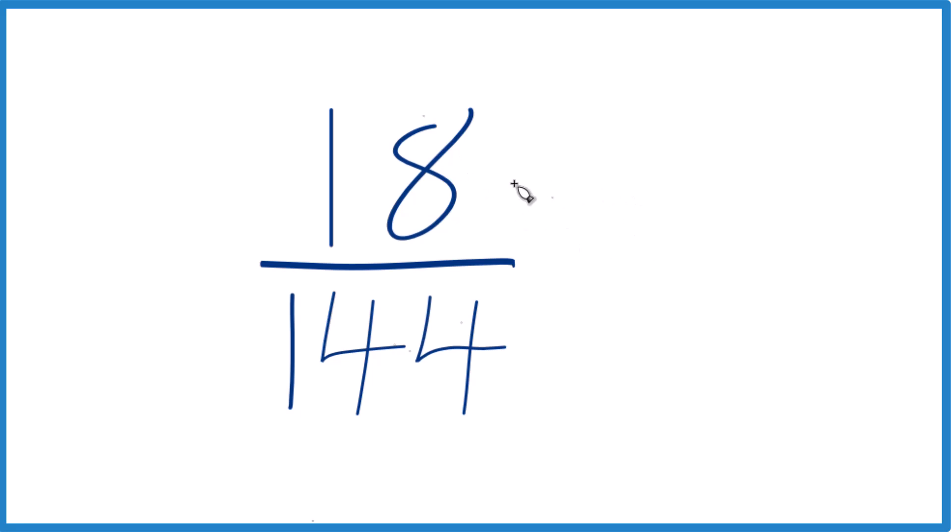to reduce it to lowest terms, and we need to find a factor that's a whole number that goes evenly into both 18 and 144, a common factor. We really want the greatest common factor.